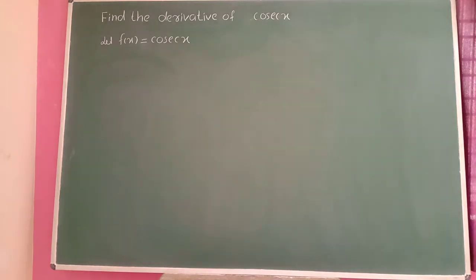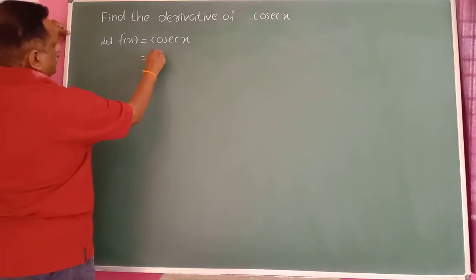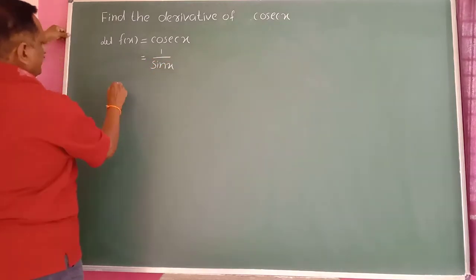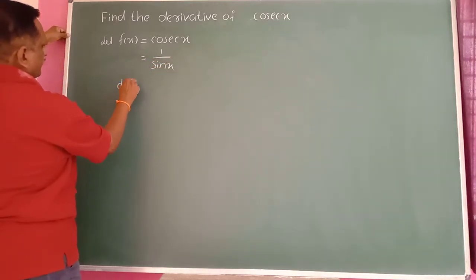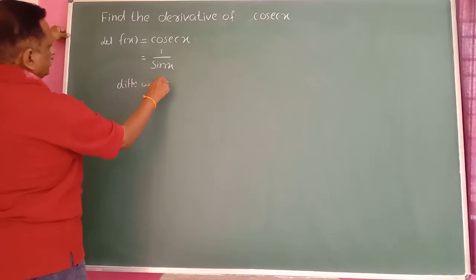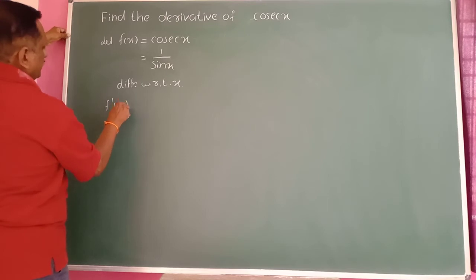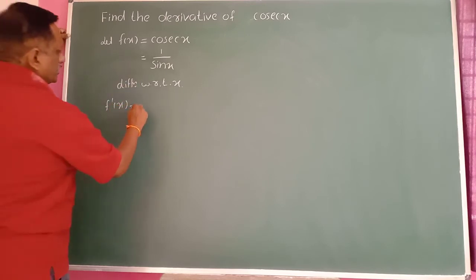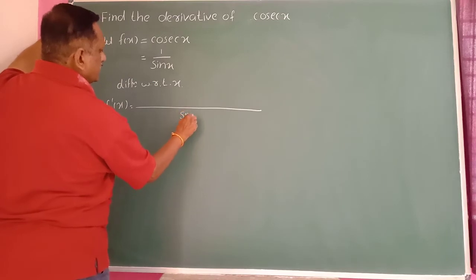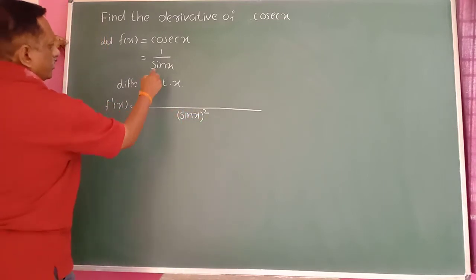Find the derivative of cosec(x). Cosec(x) is 1 divided by sin(x). Differentiating with respect to x, f'(x) equals, using the quotient formula, denominator squared sin²(x), then denominator term sin(x) into differentiation of the numerator 1.